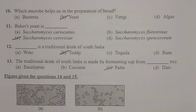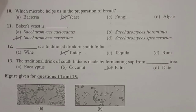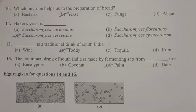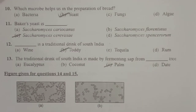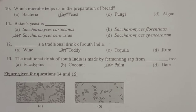Next: which microbe helps in the preparation of bread? In bakeries, they commonly use baker's yeast known as Saccharomyces cerevisiae. The main microbe used for the preparation of bread is yeast, with scientific name Saccharomyces cerevisiae. Yeast is the common microbe used in bakeries for the preparation of bread, cake, etc.